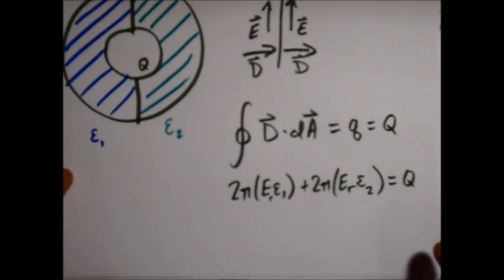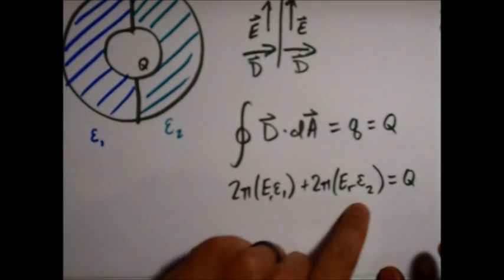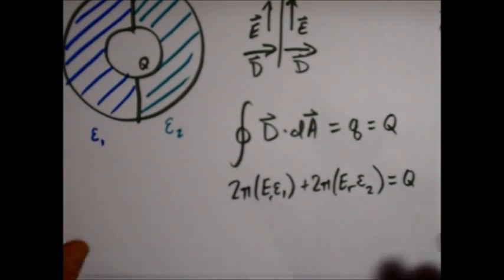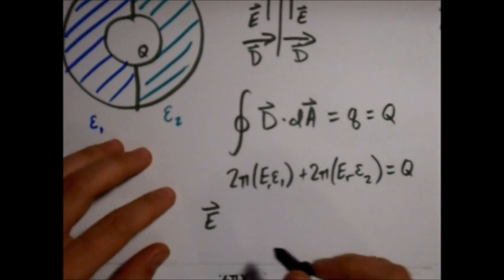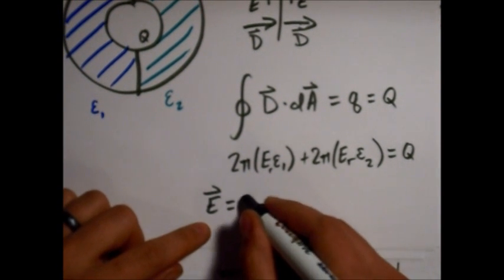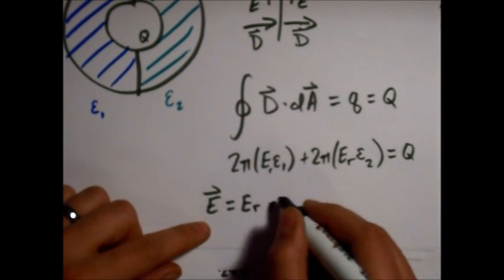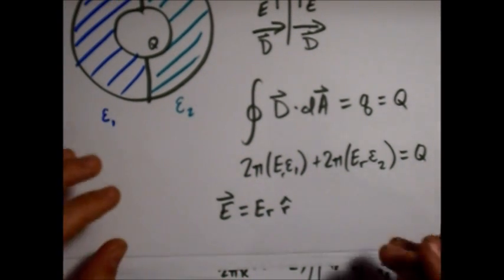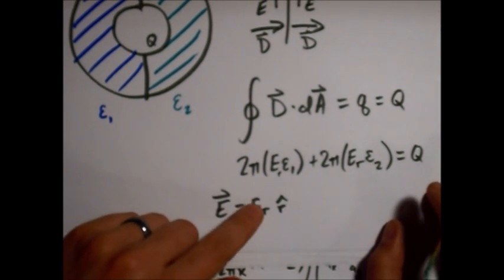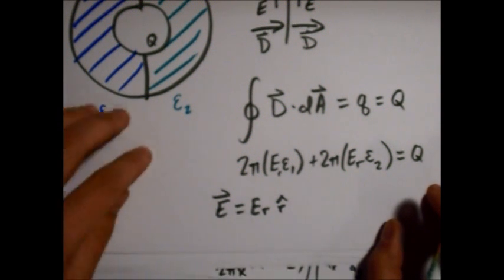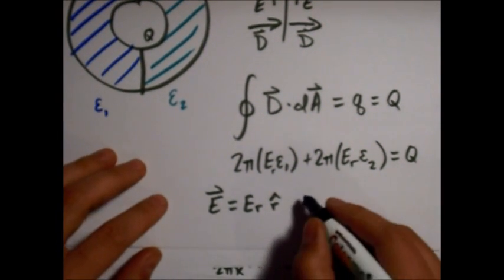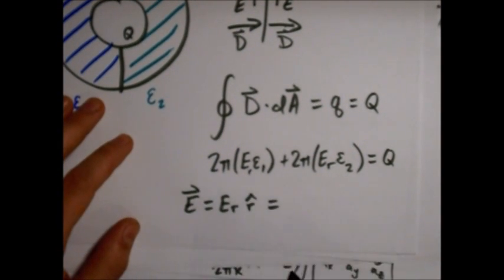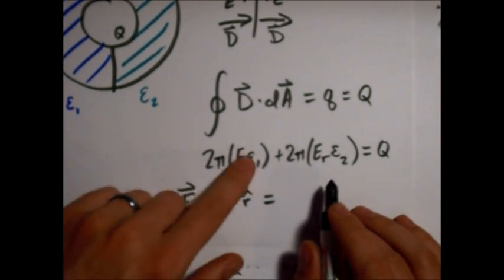All right, so from this, we'll be able to find what the electric field is. It'll completely be in a radial direction, so the vector is going to be E_R. This is a subscript R, just the radial component of the electric field, and the other components are going to be 0. It's only in a radial direction. And so we'll just solve for this E_R from this equation up here.